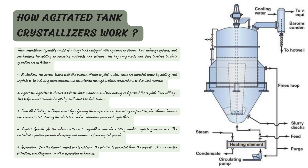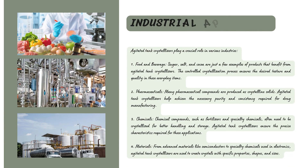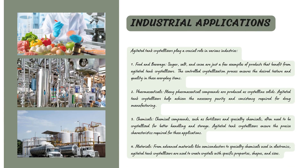Once crystals have reached the right size, the final step is separation. This is like straining pasta — the crystals are separated from the solution by filtration, centrifugation, or other separation techniques. By following these five steps — nucleation, agitation, controlled cooling or evaporation, crystal growth, and separation — you can obtain your desired shapes and sizes of crystals using an agitated tank crystallizer.